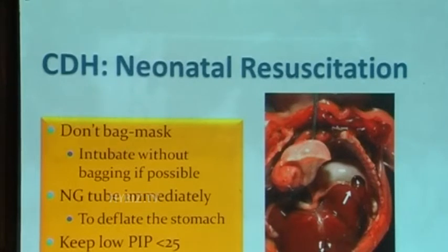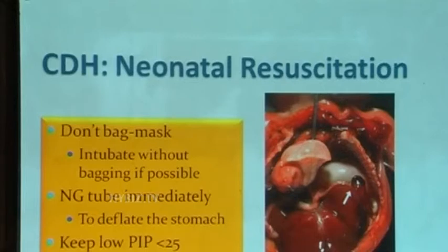Most neonatal bags have a PIP pop-off valve. Normally in the pediatric ICU you keep that valve on so you can generate high pressures for poorly compliant lungs. But in CDH, make sure that valve is off — meaning PIP does not go more than 25. Most of those bags are set at about 25.